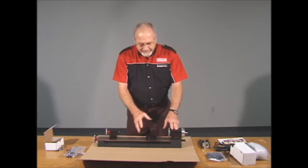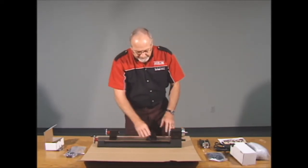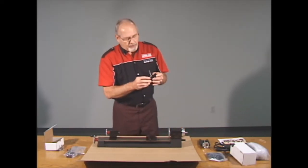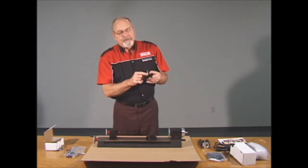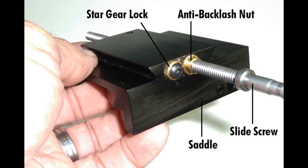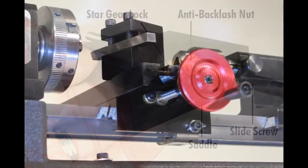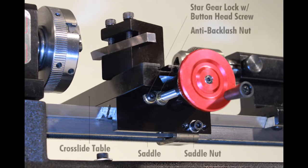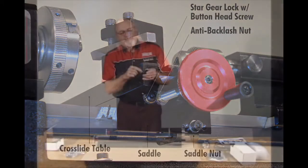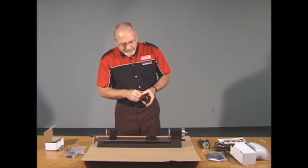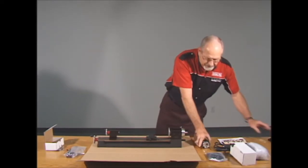Now that we have the saddle moved out where we can get at it fairly easily, this is what's new that's been added to the cross-slide saddle. We've adapted the design from the X and Y table base from the mill and used it on the lathe to control backlash better on the cross-slide. It includes a star gear lock with a button head screw that locks it, and a backlash nut that attaches against the outside of the saddle.